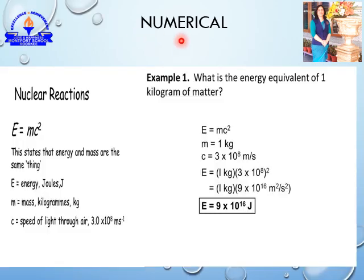The first numerical is based on Einstein's equation E = mc², where E stands for energy, which is taken in joules in the SI system; m stands for mass, taken in kilograms; and c stands for the speed of light, which is 3 × 10⁸ meter per second in the SI system.